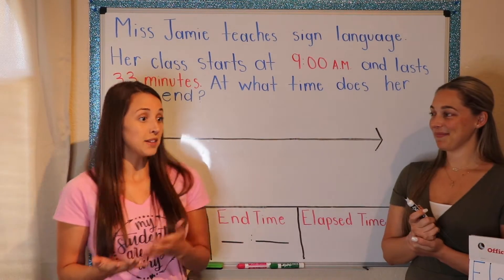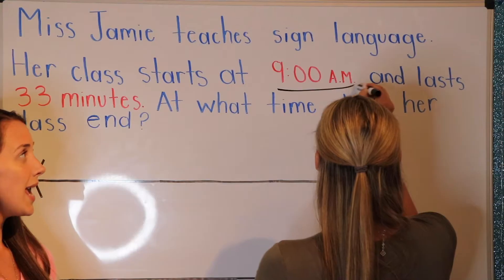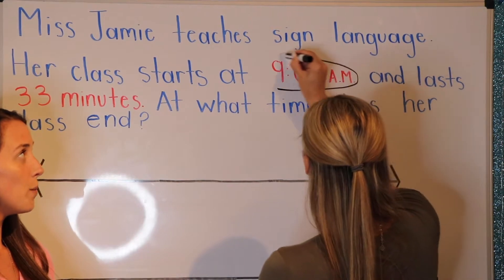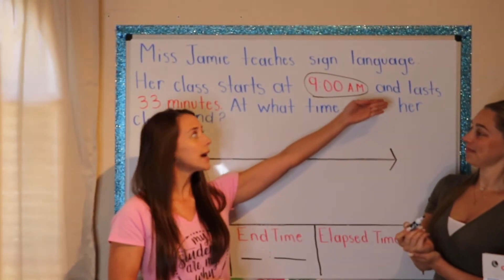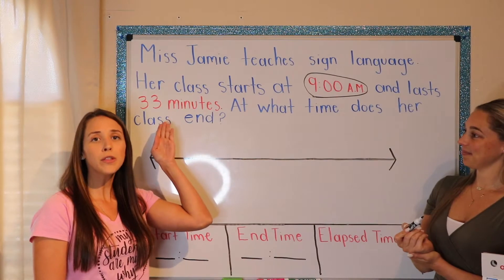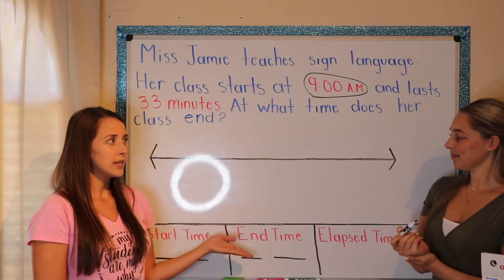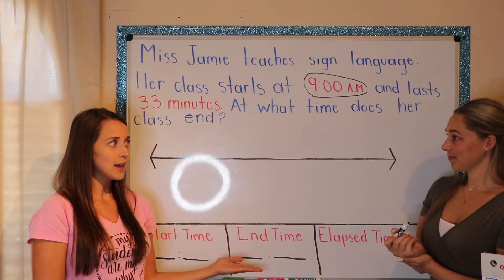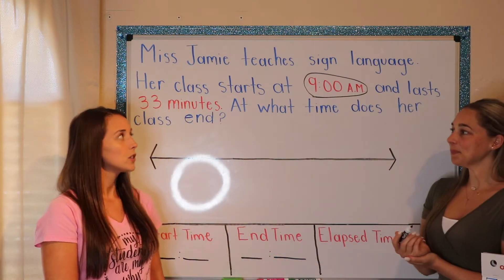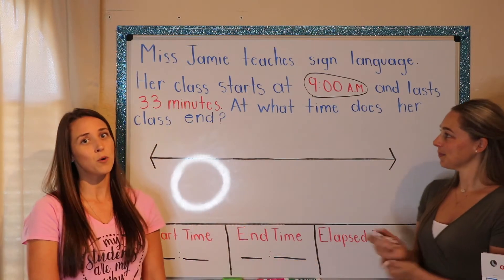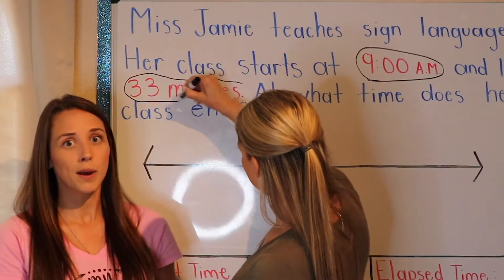Is it my end time? Your start time. So can you circle that for me, Ms. Jamie? Thank you, my lady. And it lasts — so it starts at 9 a.m. and lasts 33 minutes. Do you think the 33 minutes is my end time, or do you think it's my elapsed time? Elapsed time. So can you circle that important information for me? Wow, beautiful circle, by the way. Really.